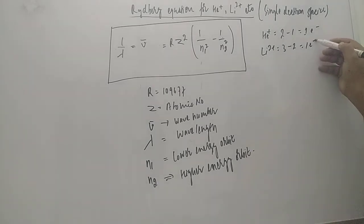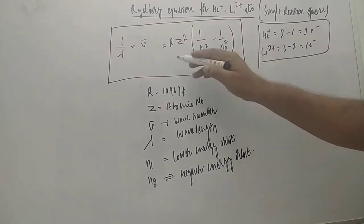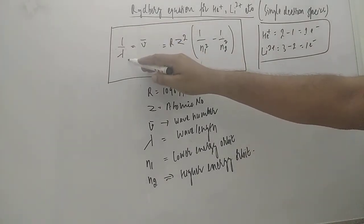So this is applicable for single electron species. Now, if you check out, the Rydberg equation is again modified. One by lambda equals ν̄ (nu bar) equals...